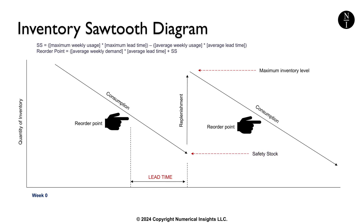In summary, the sawtooth diagram is widely used in inventory management to provide a clear and visual understanding of how inventory levels fluctuate in response to demand and choices you make for replenishment.